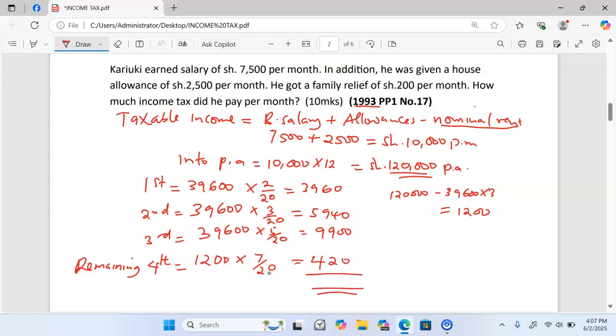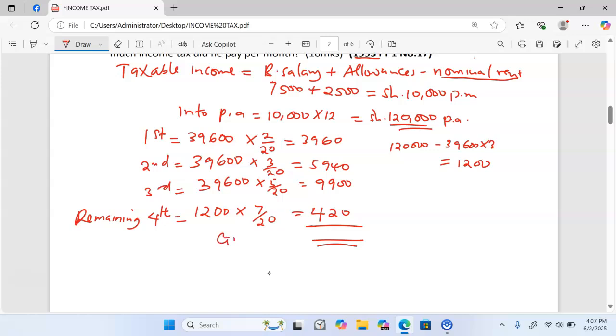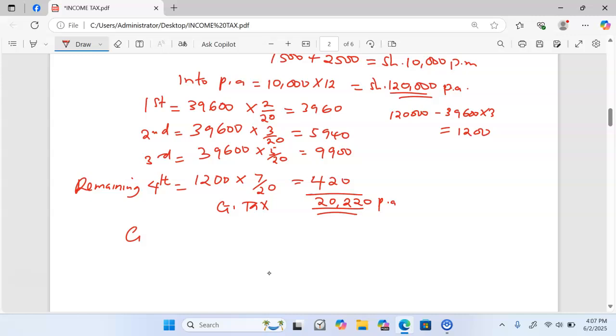Now we can add all these to get what we call gross tax or simply tax from the tax brackets, and the total of this will be 20,220 per annum. We need now to get the gross tax per month by taking 20,220 we divide by 12, and this one is going to give us an amount equivalent to 1,685 shillings.